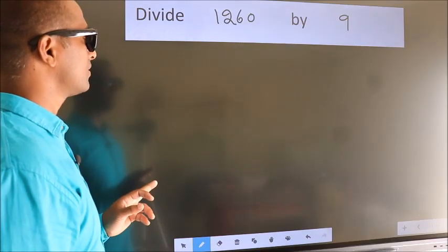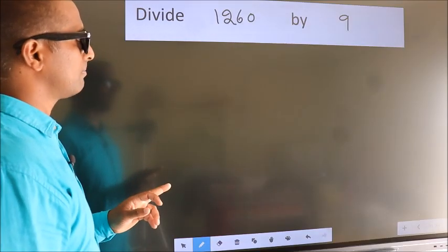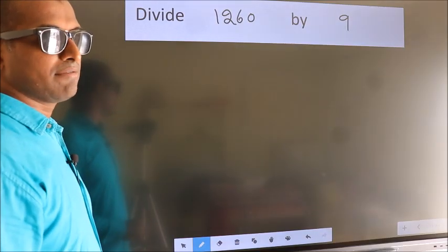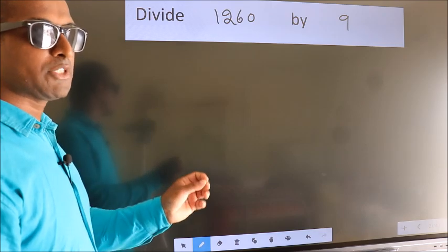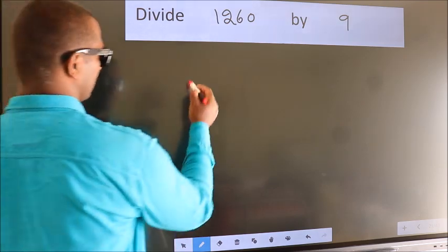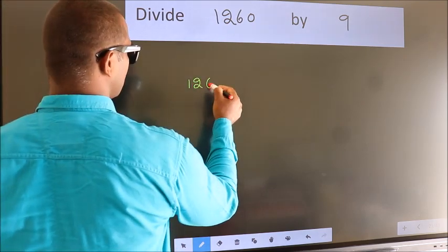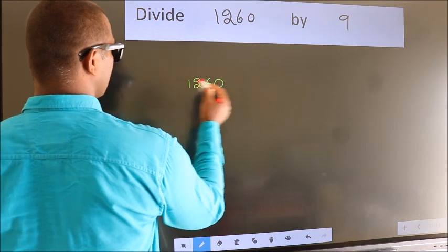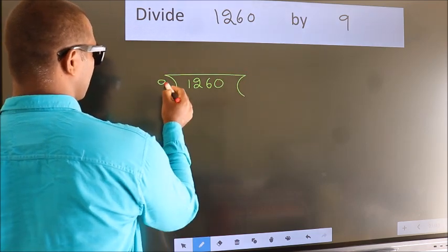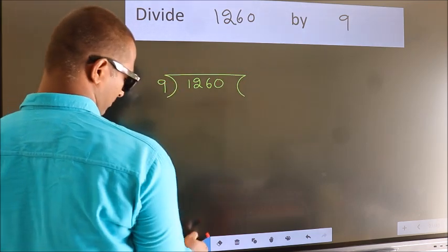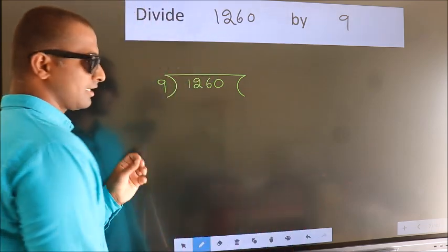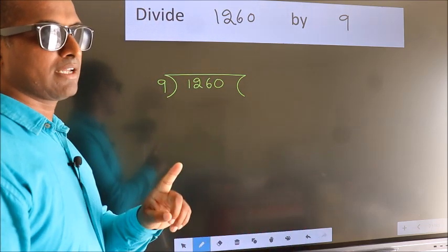Divide 1260 by 9. To do this division, we should frame it in this way: 1260 here, 9 here. This is your step 1.